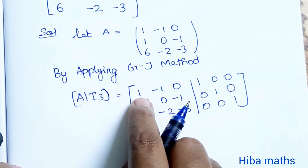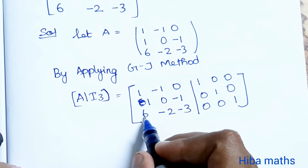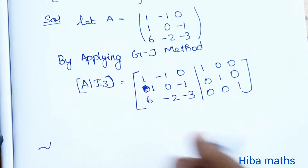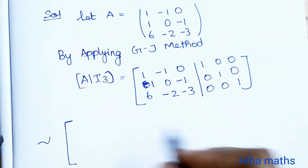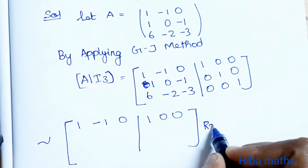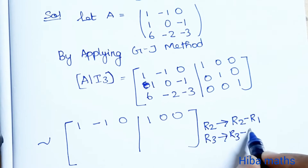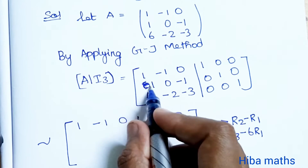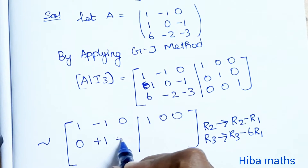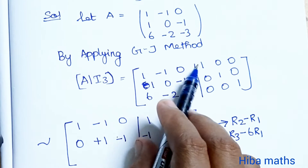We apply R2 → R2 - R1 and R3 → R3 - 6×R1. For R2: [1-1, 0-(-1), -1-0 | 0-1, 1-0, 0-0] = [0, 1, -1 | -1, 1, 0]. For R3: [6-6, -2-(-6), -3-0 | 0-6, 0-0, 1-0] = [0, 4, -3 | -6, 0, 1].